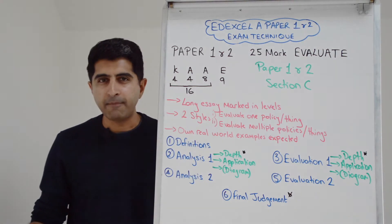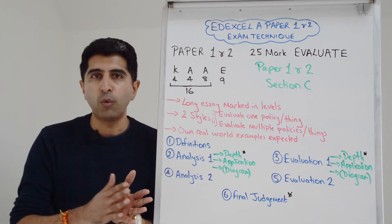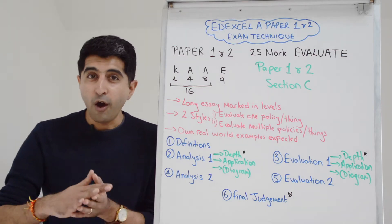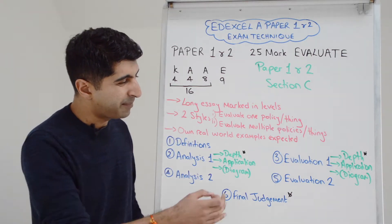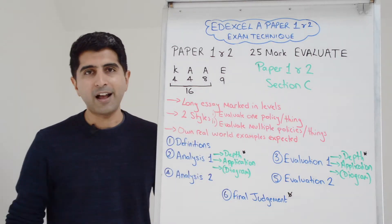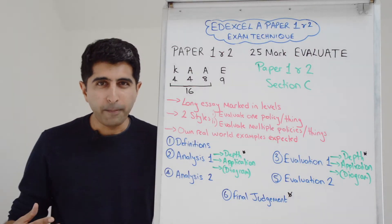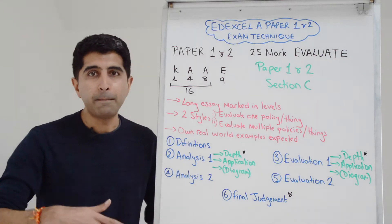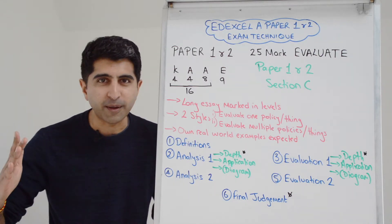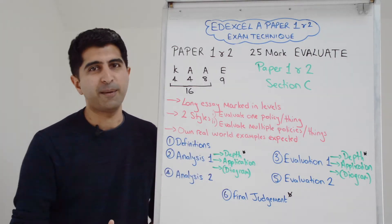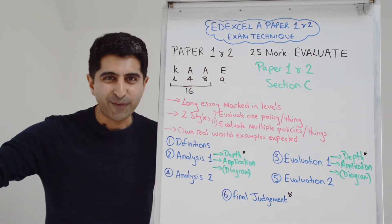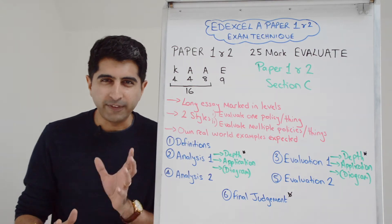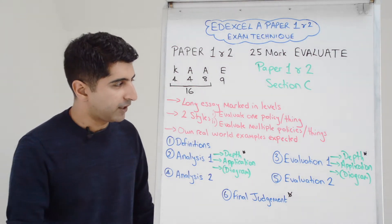There are two styles of 25 mark. You can get one that says evaluate one policy or one thing, basically the pros and cons. That's quite an easy style, but so is the second one. The second style might say evaluate multiple policies or multiple things. For example, evaluate the benefits, the costs, the macro effects, the causes of something. What you're going to see later is that it doesn't matter what the style is. Your structure is always going to be the same.